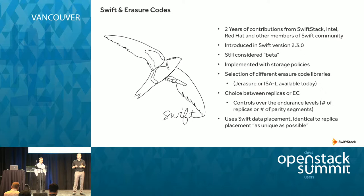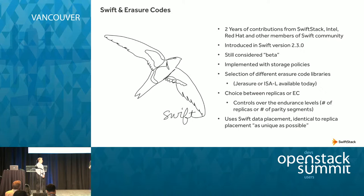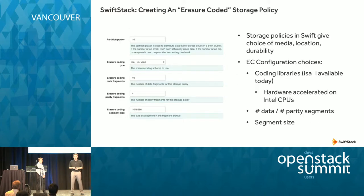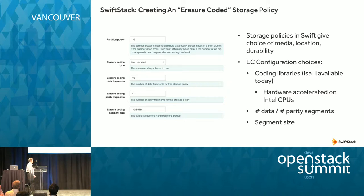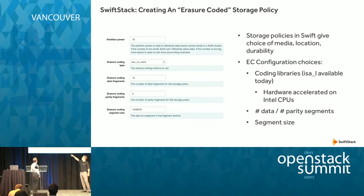We're still using the same mechanisms to place these erasure-coded bits across your cluster. Swift's guarantee for data is to distribute it widely across the disk space available and do it in an intelligent manner so it can always be redundant in the event of a failure of any component. We're still using that same placement algorithm, just doing it a little differently using erasure codes. What we're going to show you today is how to create an erasure-coded storage policy using the SwiftStack interface, where you can configure how many data fragments and how many parity fragments you want.